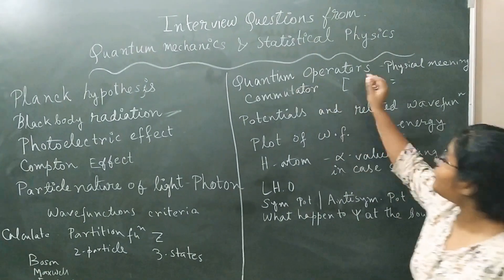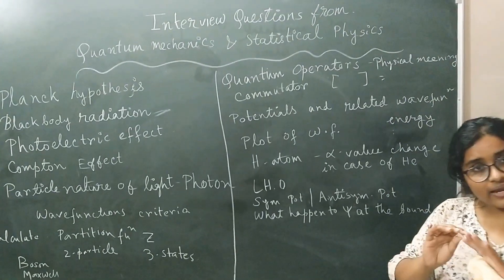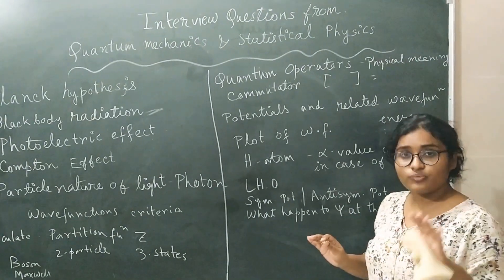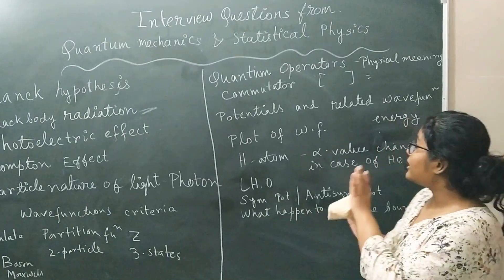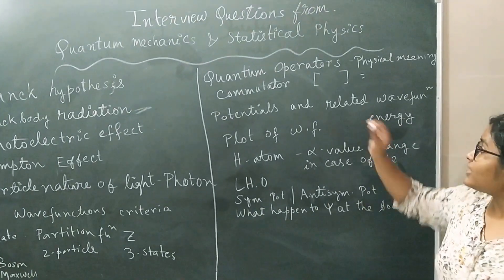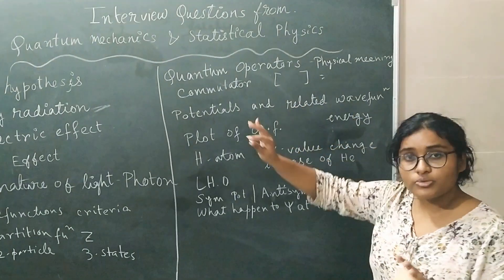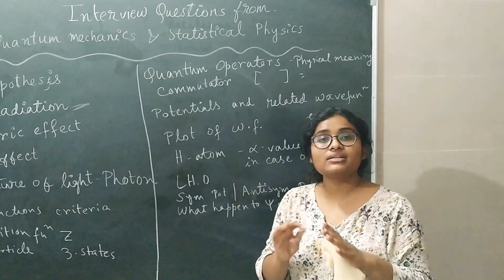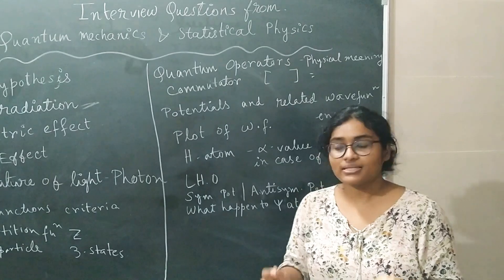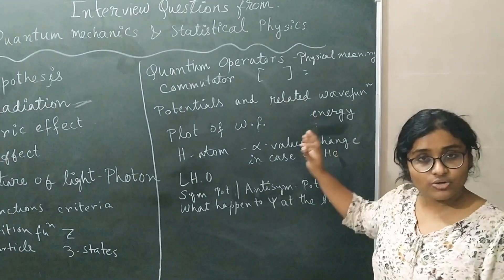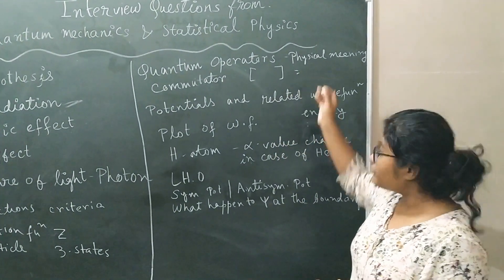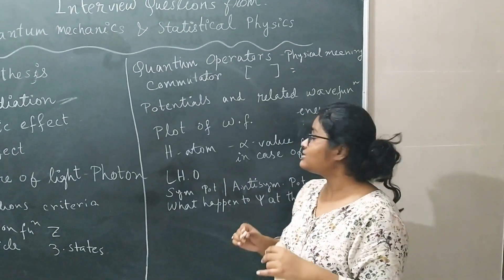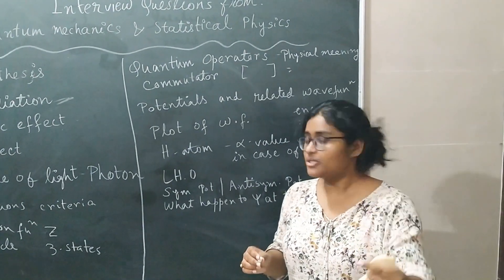Another is the quantum operators and their physical meaning. That is also very important. Like, why do you calculate expectation values? What are the quantum operators like? Commutators. What does it mean? Means, if commutator is non-zero, then what does it mean? The meaning of that commutator is non-zero means, the two functions cannot be measured simultaneously at a precision limit.